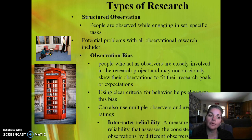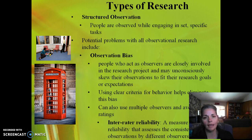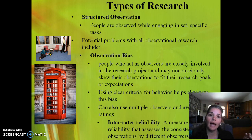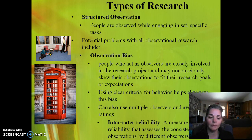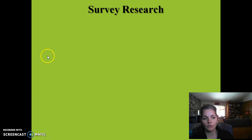It's really important when doing observational research, whether structured or naturalistic, to have very clear criteria for what constitutes the behavior you're looking for, to eliminate bias. Additionally, you might have more than one person observing and then assess how well those two observers correlate. If we're grading a situation consistently with each other, that's considered inter-rater reliability — where how we're assessing something is consistent between different observers.